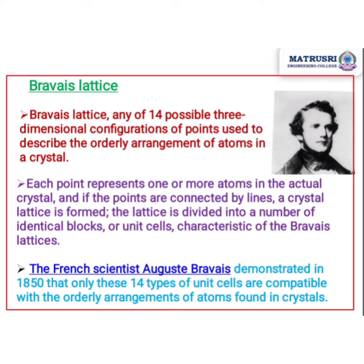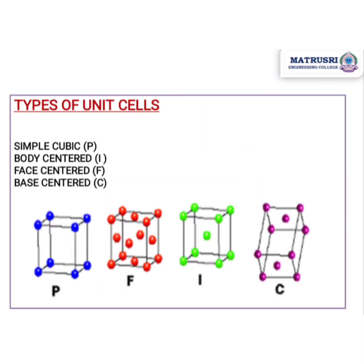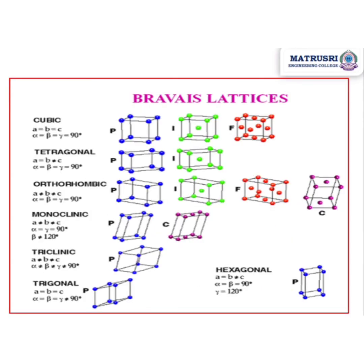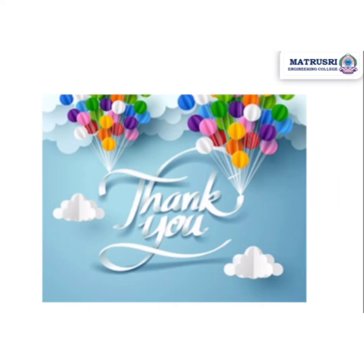The different types of unit cells are primitive, face-centered, body-centered, and base-centered. You can see the corresponding diagrams here. You should practice these diagrams as they are very important concepts in crystallography. Thank you for watching — if you have any doubts, please send a mail to me.